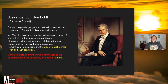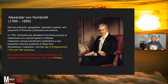Many scientists and thinkers who contributed to the Enlightenment were Christians, also called Puritans. Puritans are the first supposed Christians that came to America when the Atlantic slave trade took place to colonize this land.